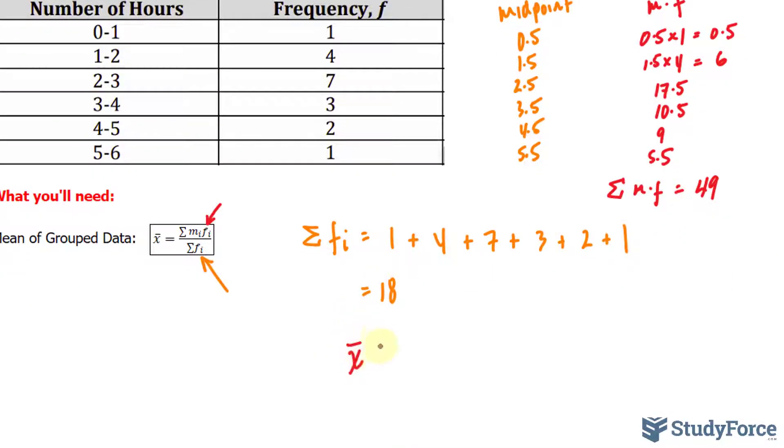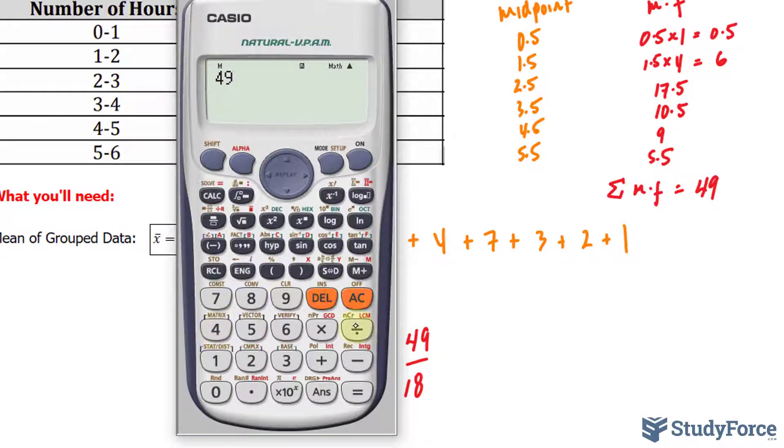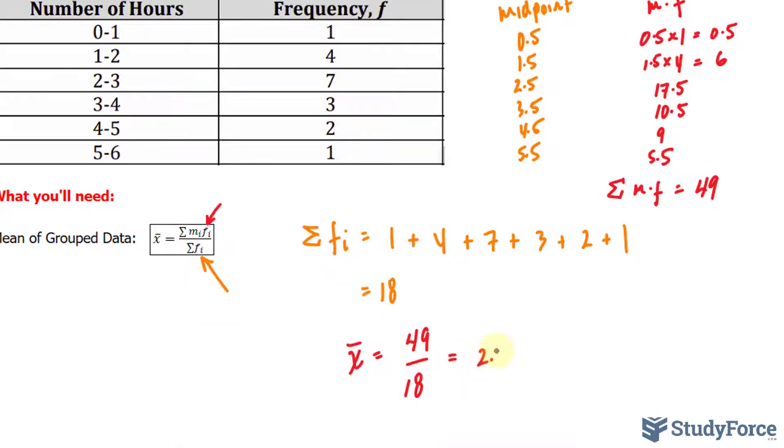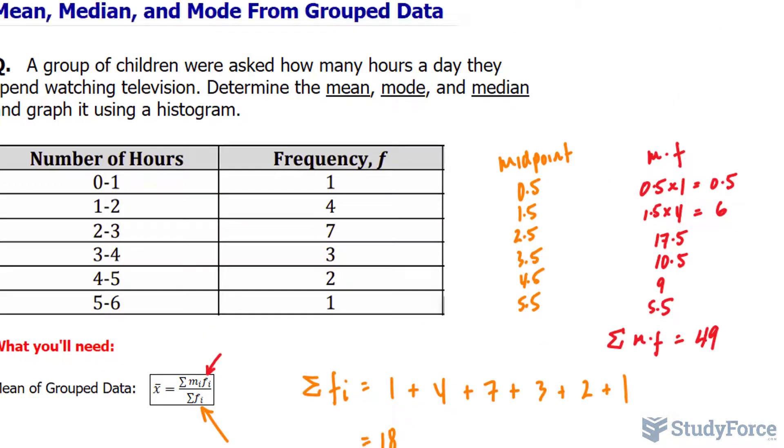So we have x bar is equal to 49 over 18. Dividing these out should give you your mean. The mean is 2.7, roughly 2.7. OK, so now you know how to find the mean of grouped data.